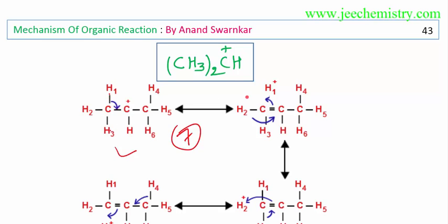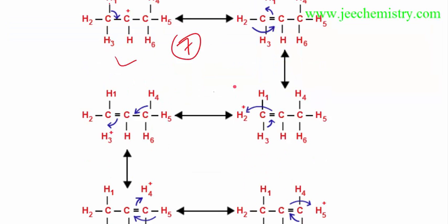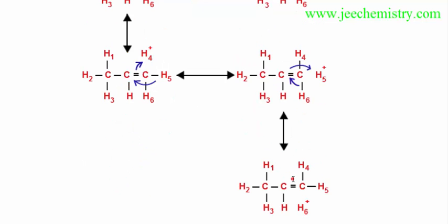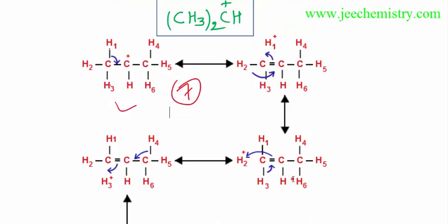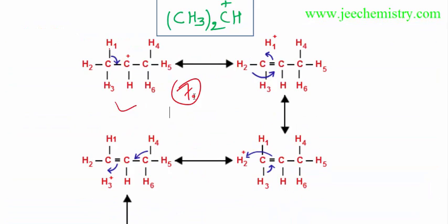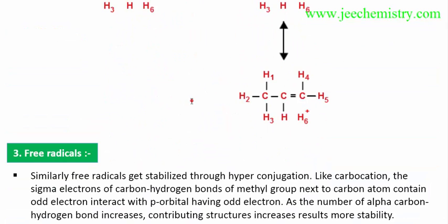H1 shifts to this position and becomes H1 plus. Similarly H2 becomes H2 plus, H3 becomes H3 plus, H4 plus, H5 plus, H6 plus — in a similar way. So seven resonance structures will be formed for isopropyl carbocation.